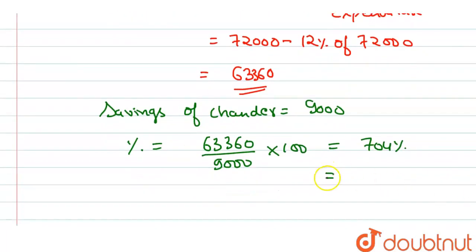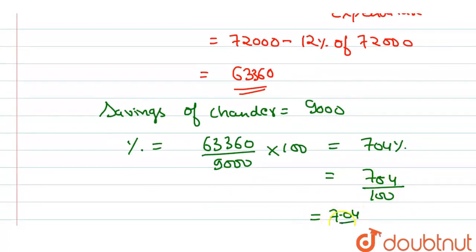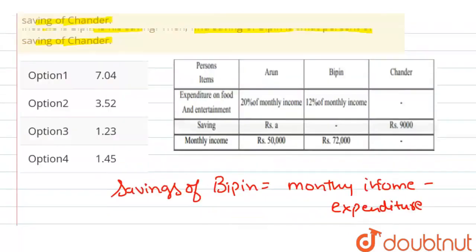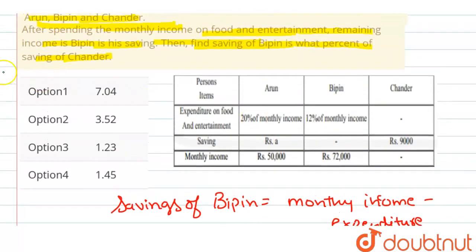यह हमारा percentage में से decimal में change करेंगे, divided by 100 करेंगे, तो यह value आएगी हमारी 7.04 के equal. यह हमारा answer होगा, option match कराते हैं, तो option number 1 will be the correct answer. I hope you liked this video, thanks for watching.